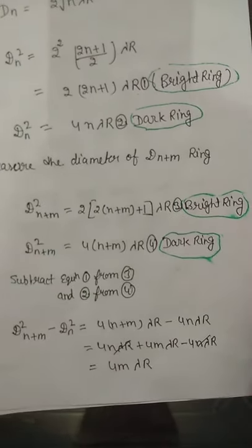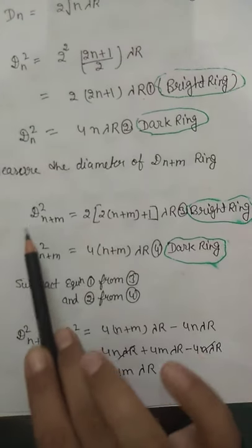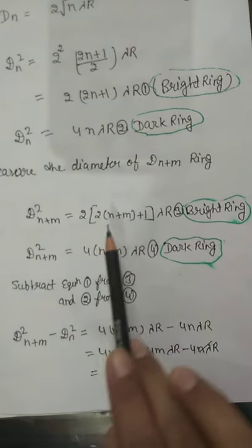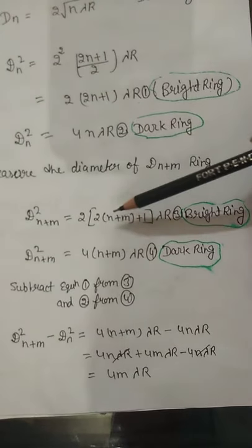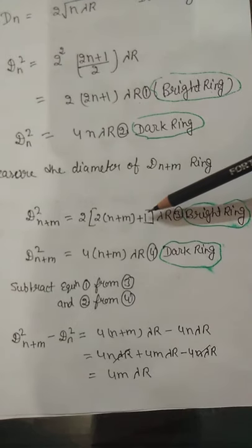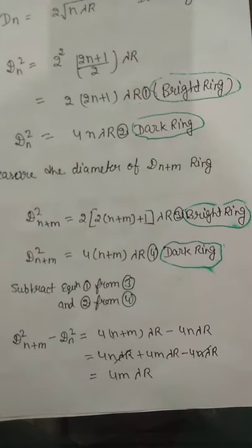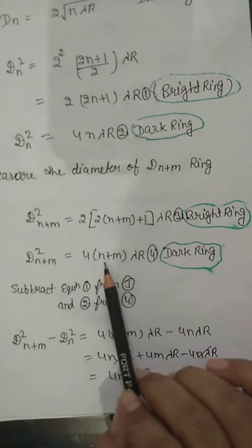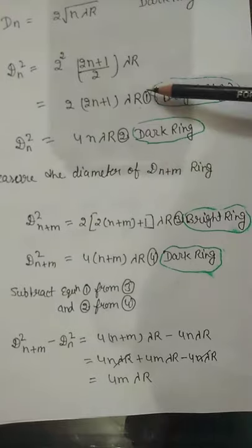Now we have the diameter of the (n+m)th ring. The D_(n+m) squared for the dark ring will be 4(n + m) × lambda × R. So we now have equations 1, 2, 3, and 4.